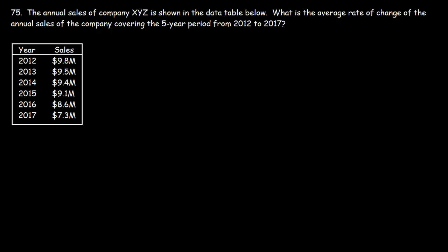Let's work on one more problem, similar to the last one. So we have the annual sales of company XYZ, and we have the year that corresponds to those sales. What is the average rate of change of the annual sales of the company covering the five-year period from 2012 to 2017? So what we're going to do is take the sales at a second point minus the sales at the first point and subtract it by T2 and T1. So the first point is at 2012. The second point is 2017.